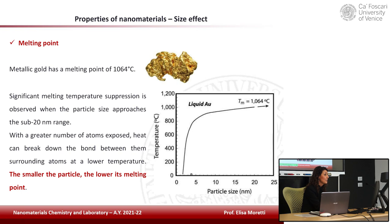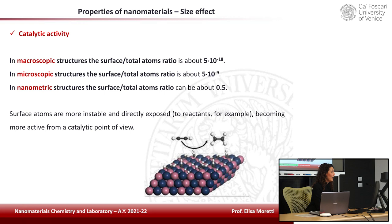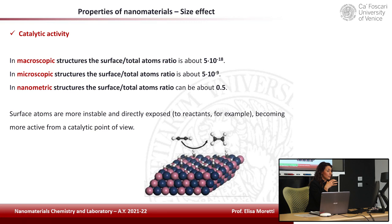For catalytic activity, comparing macroscopic, microscopic, and nanometric structures: the ratio of surface atoms to total atoms changes by orders of magnitude. In nanometric structures, approximately one atom out of two is exposed on the surface. Surface atoms are more unstable and directly exposed to reactants, becoming more active from a catalytic point of view.